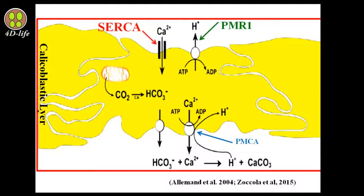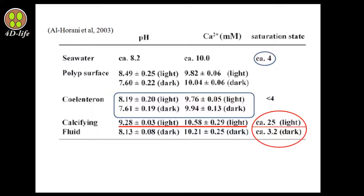Now let's discuss pH in the context of calcification. Normally, for coral calcification, seawater needs to have an aragonite saturation state of about 4 and a pH of 8.24. As shown in this table, there is a slight difference in aragonite saturation state and pH between seawater and inside the coelenteron. Inside the coelenteron, the pH range is around 8.19 and the aragonite saturation state is slightly less than 4, a condition necessary to transfer ions by diffusion into the coelenteron.